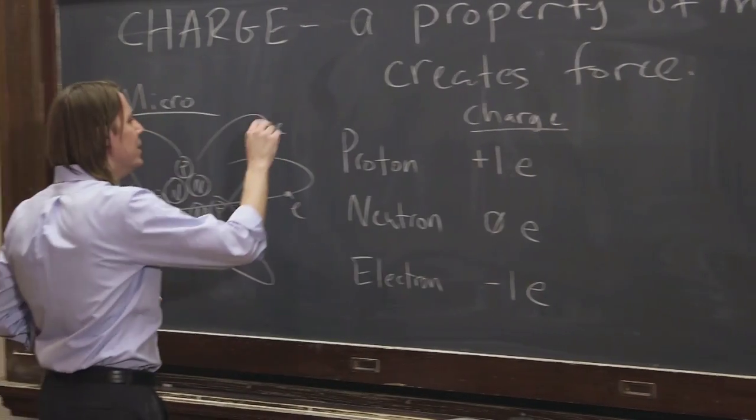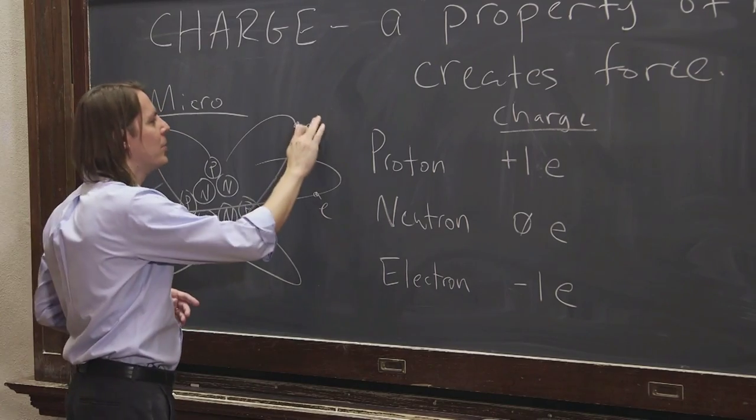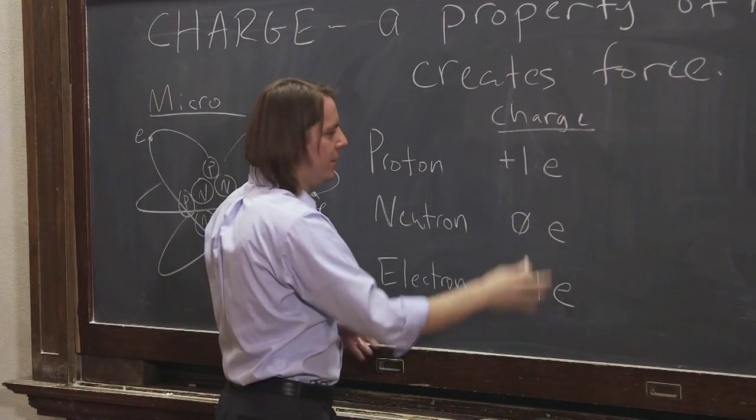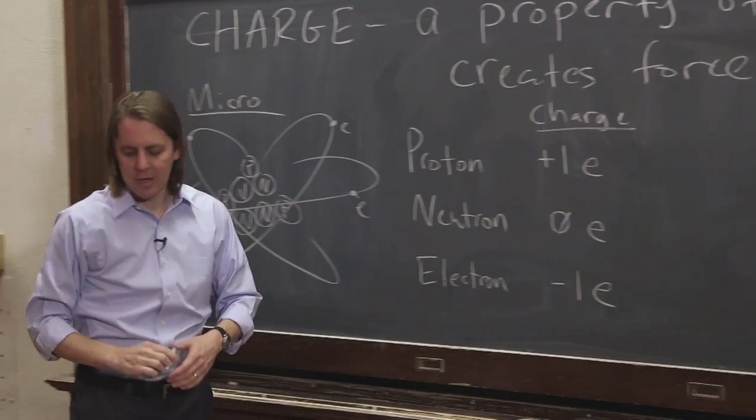So e, sometimes we write a little e and mean an electron. Sometimes we even put a little dash on it. That's the negative sign. But when we're talking about a unit, e is not positive or negative. It's just a unit. So plus 1e for the proton, minus 1e for the electron.